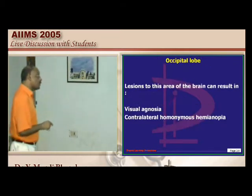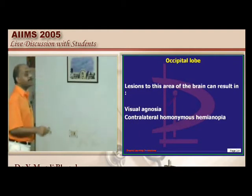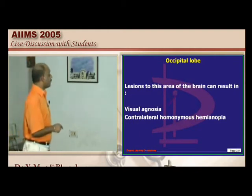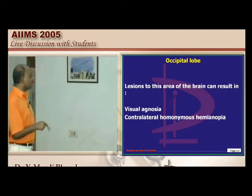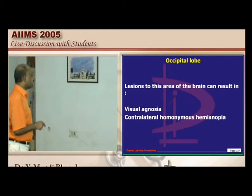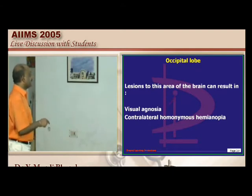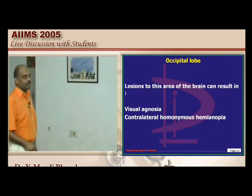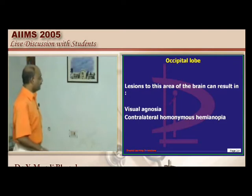For occipital lobe: visual agnosia and contralateral homonymous hemianopia. Contralateral homonymous hemianopia is seen in the occipital lobe; contralateral upper homonymous quadrantanopia in the temporal lobe. The parietal lobe also produces contralateral homonymous hemianopia.